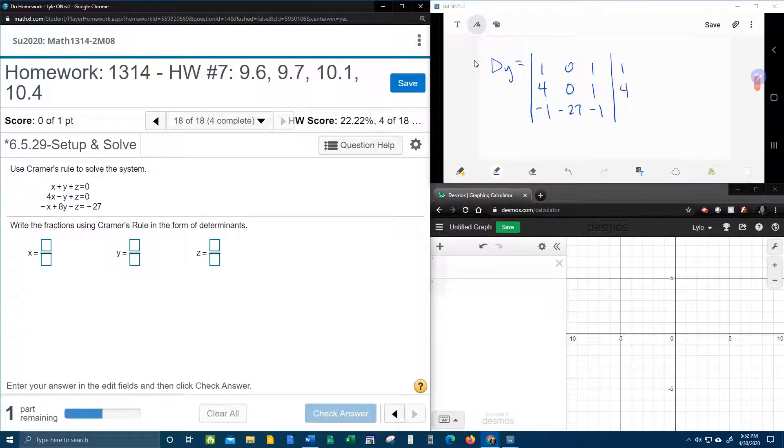And then it's time to do the shortcut again. So copy and paste, 1, 4, negative 1, 0, 0, negative 27. Here we go. So on the diagonal, 0 times anything is 0. 0 times anything is 0. And 1 times 4 times negative 27. That's going to be 4 times negative 27, which is negative 108. Add them up, negative 108.